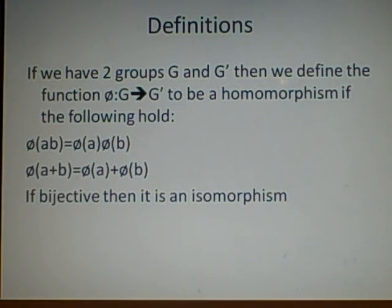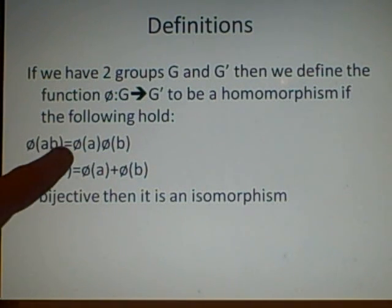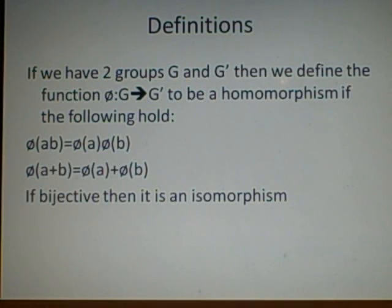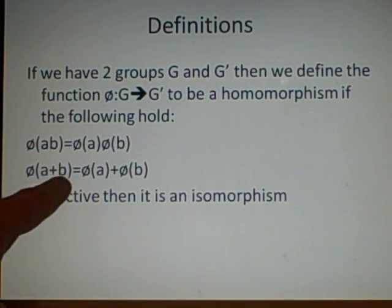And then if they map, it's a homomorphism, and we can prove this by saying that phi of ab equals phi a times phi b, and phi of a plus b is phi a plus phi b.